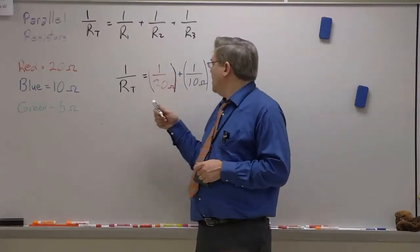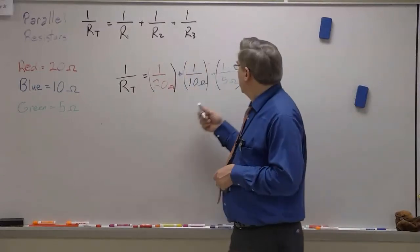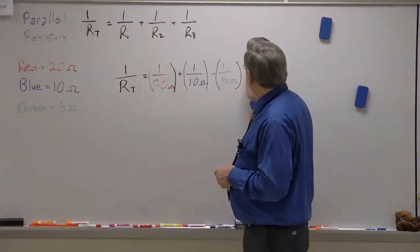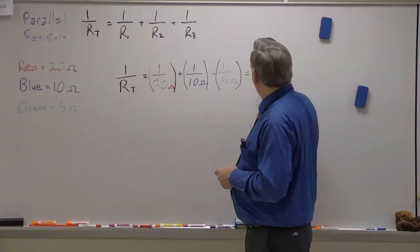So 1 over 20, which is 0.05, plus 1 over 10, which is 0.1, plus 1 over 5, which is 0.2. If we add all this up in our calculator, we get 0.35.